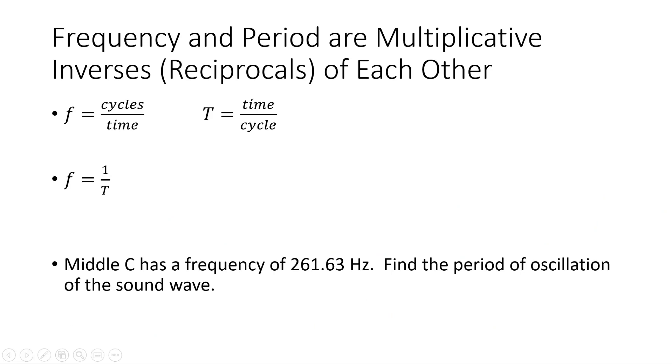Frequency and period are also multiplicative inverses of each other, or they're the reciprocal of each other. We can see that because frequency is cycles per unit time, and period is time per cycle. So we can relate them by saying frequency is 1 over period, or we could also say period is 1 over the frequency.